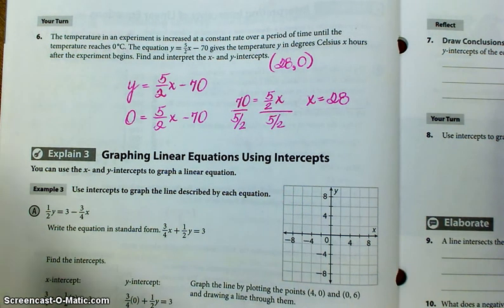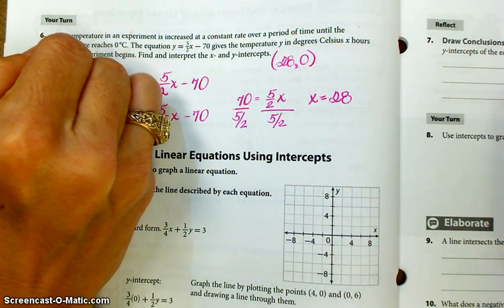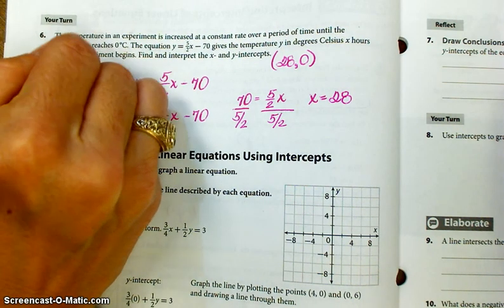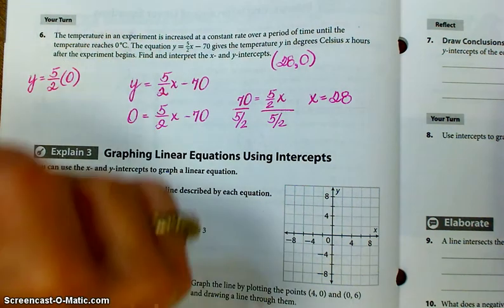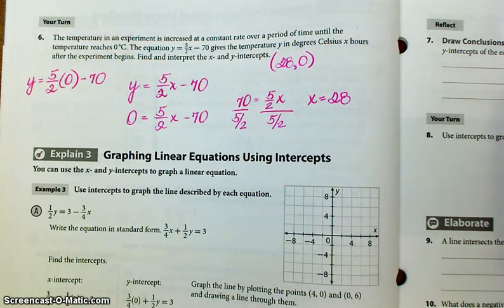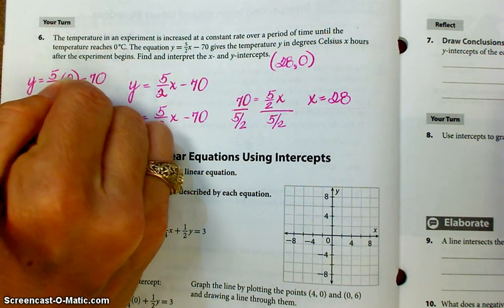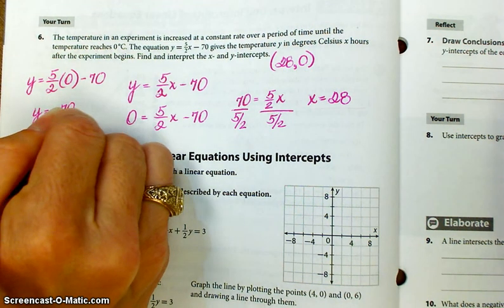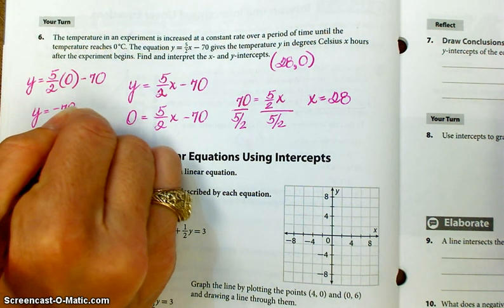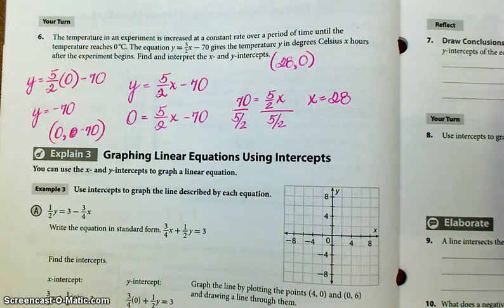And then, if I wanted the y-intercept, I would put a 0 in for my x-value. 5 halves times 0, and that's pretty easy. The y-intercept is going to be negative 70. So, 0 comma, negative 70 is my y-intercept.